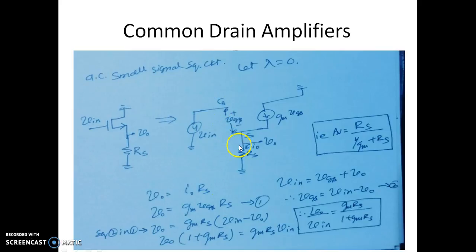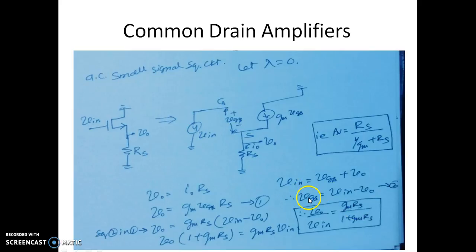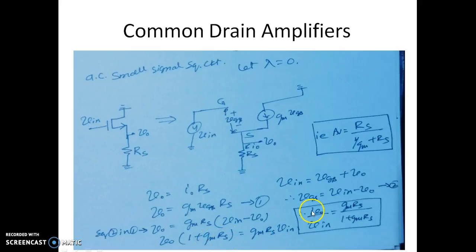VGS is the voltage between gate and source. From the circuit, VIN equals VGS plus V0, so VGS equals VIN minus V0. Substituting this into the equation, we get the expression: V0 equals GM times RS times VIN divided by (1 plus GM times RS). So the voltage gain AV equals GM times RS divided by (1 plus GM times RS). Since the denominator is always greater than the numerator, the gain of this common drain amplifier is always less than 1.